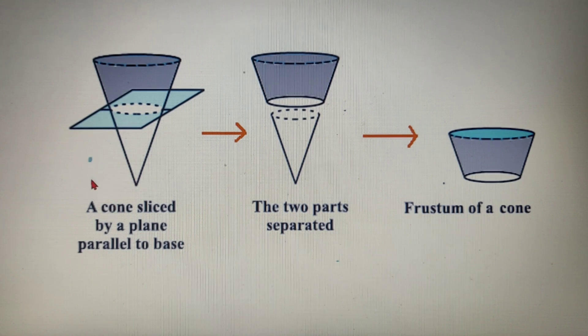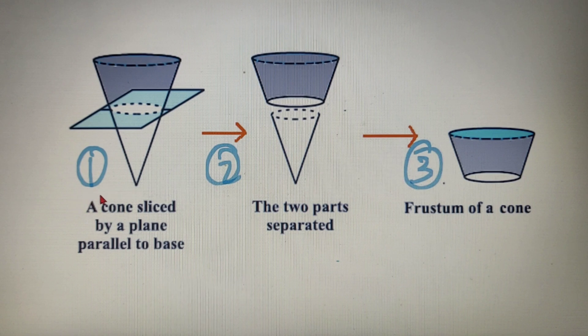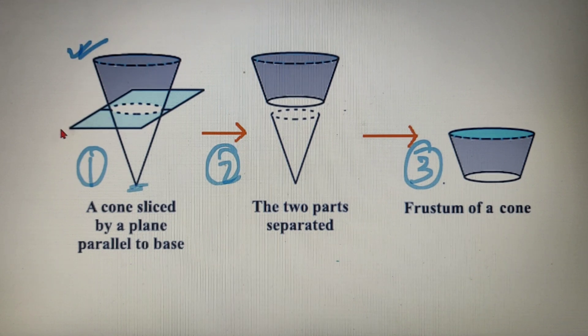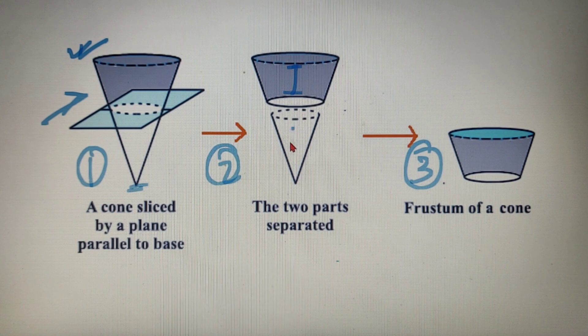Now over here we have three different figures, let's name them 1, 2 and 3 respectively. Now in the first figure we have an inverted cone and you can see that the top is facing downwards and the bottom is facing upwards. Now over here you can clearly see that a plane is passing through somewhere middle of the cone and it is dividing the cone in two parts, let's name them one and two respectively.